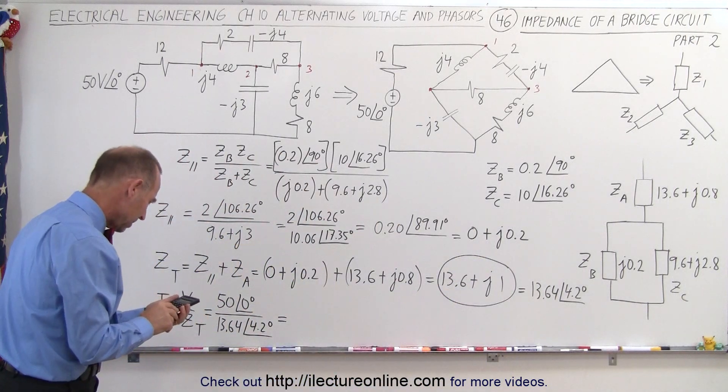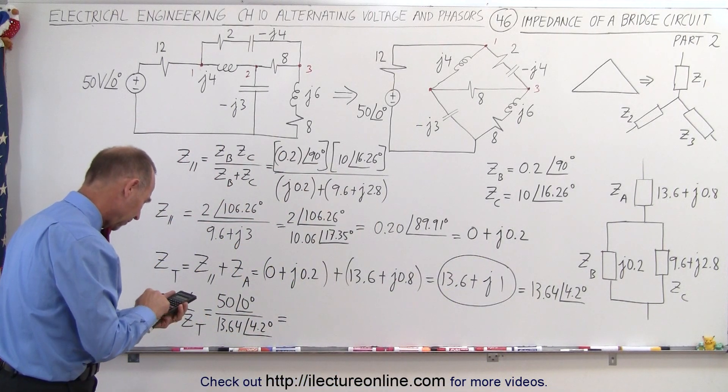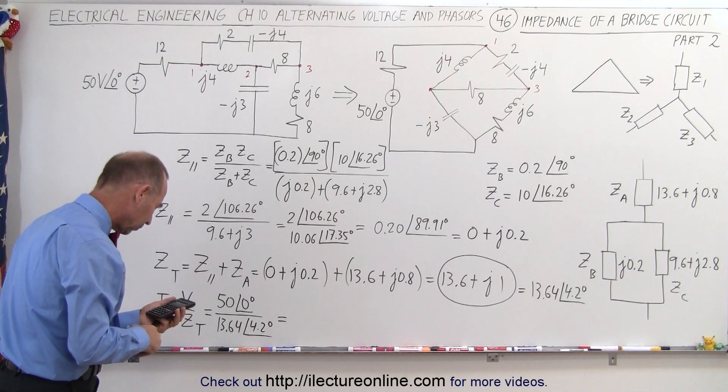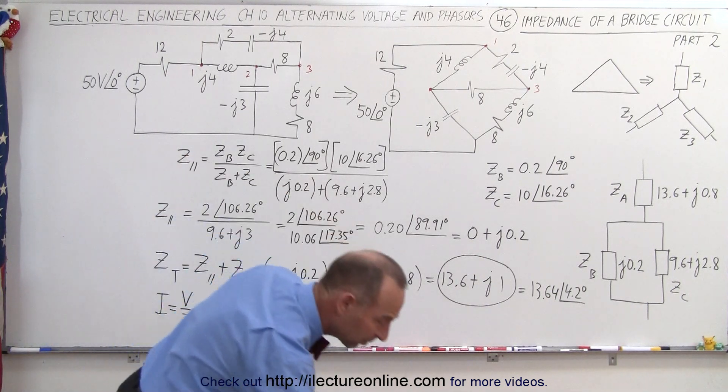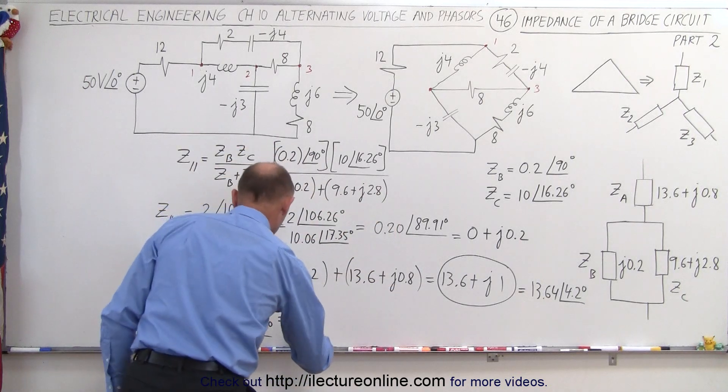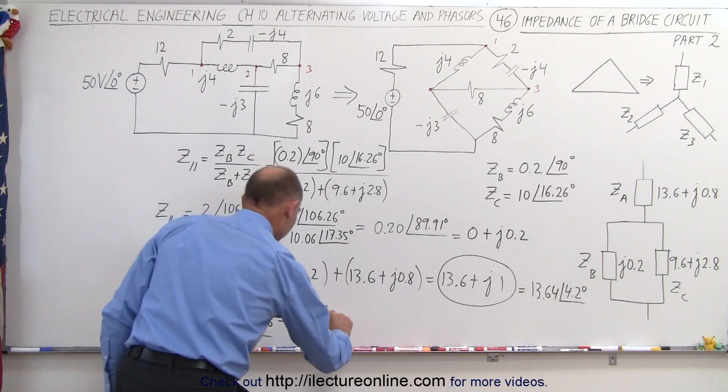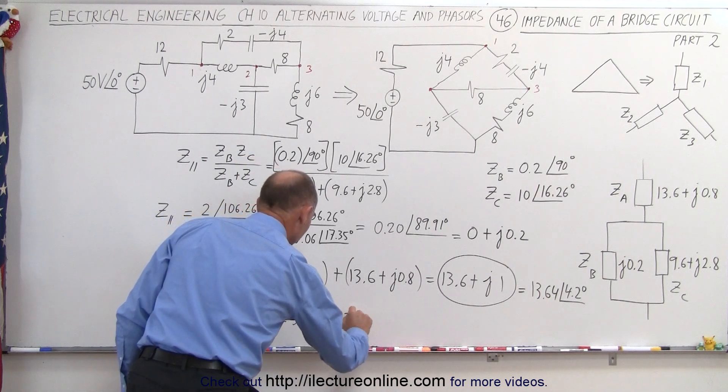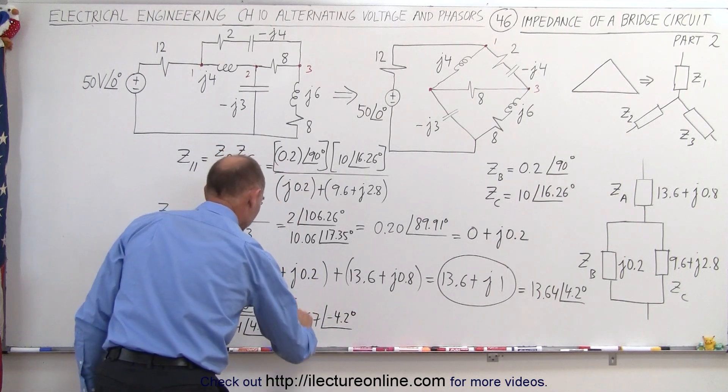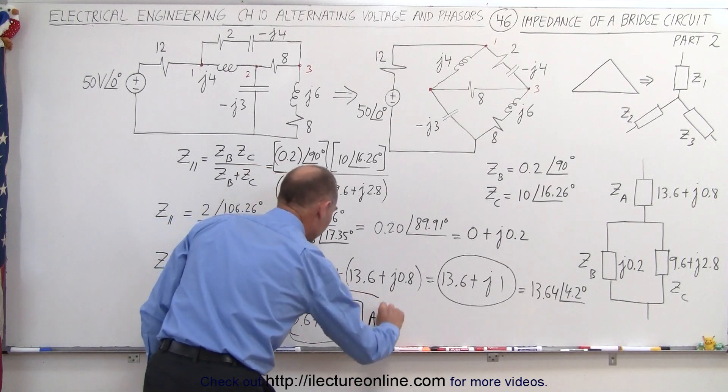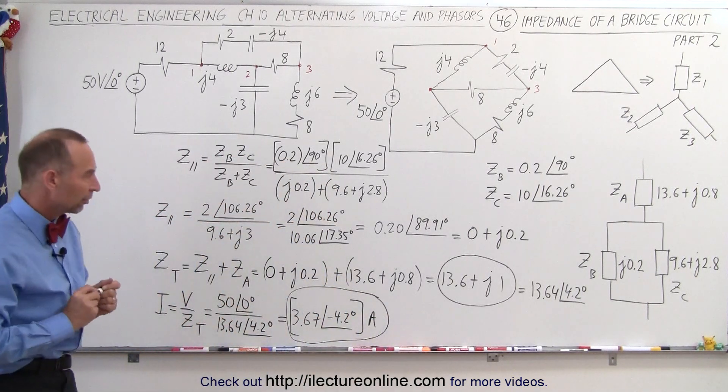Let's go ahead and do that, so we have 50 divided by 13.64, it gives us 3.67, with a phase angle of minus 4.2 degrees. And that, of course, would be in terms of amps. And this here is the current through our circuit.